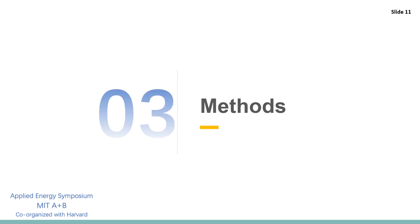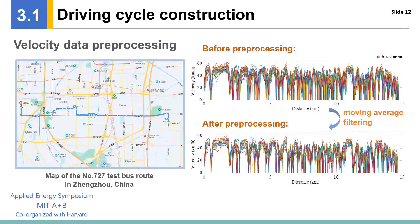Part three are methods. Part three includes two aspects. The first one is the driving cycle construction. The real velocity data in our research are collected using the inertial navigation device from a fixed urban bus route in Zhengzhou, China. The collected velocity data couldn't be used directly, since it contains a lot of noises. The moving average filtering method is used to carry out the data preprocessing.